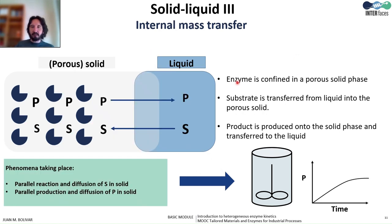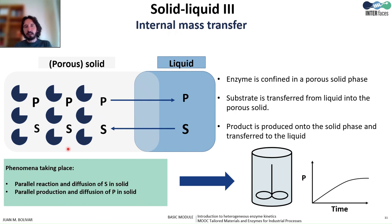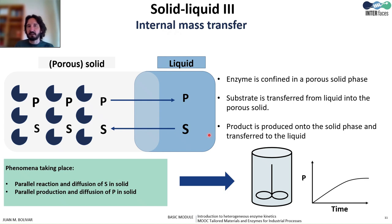The second situation we can have in a solid-liquid system is where the enzyme is immobilized inside a material — normally a porous solid material. In this case, the reaction is taking place inside the solid, and there is parallel reaction and transport by diffusion of the substrate, and parallel production of the product and transport by diffusion of the product to the liquid phase. So how the product accumulates in the reactor and how fast it is produced depends on both the biochemical reaction rate and mass transport by diffusion.